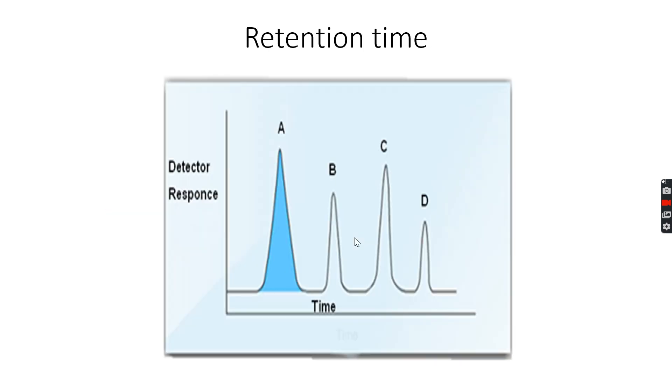Now we have done retention time. This is a typical retention time graph for a mixture of solutes A, B, C, and D. The mixture is separated into the individual solutes, and as I said, the area under the curve upon the sum of all the areas gives the percentage composition.